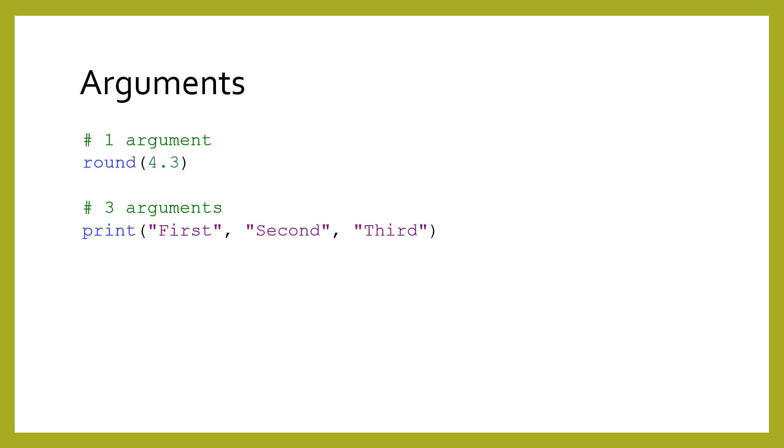One of the most useful features of functions are arguments. Arguments are values that are given to functions that affect the behavior of the function. Arguments for a function are placed inside the parentheses, and each one is separated by a comma. We say that these arguments are being passed to the function.